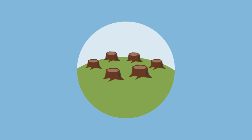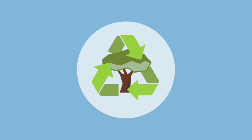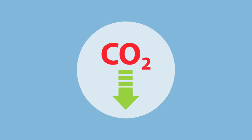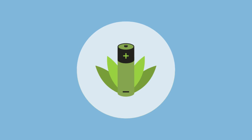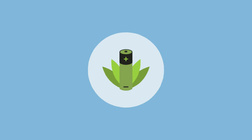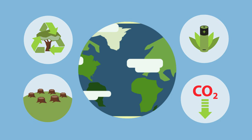Stopping habitat destruction is a key starting point. As well as becoming greener, lowering our carbon footprint and using sustainable products, we may be able to affect this, and it's up to all of us to play our part.